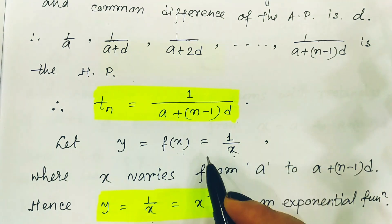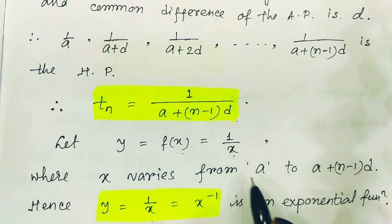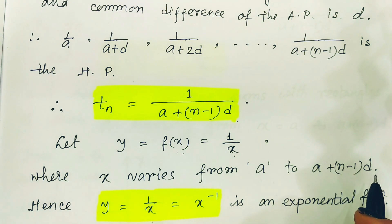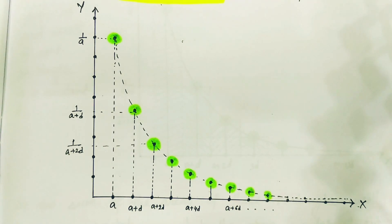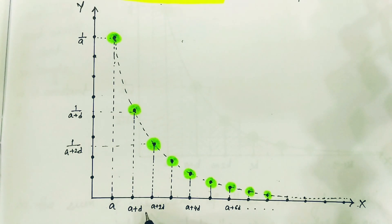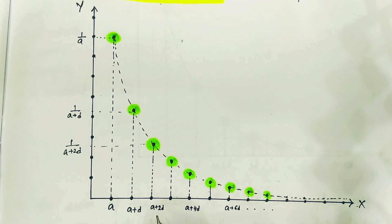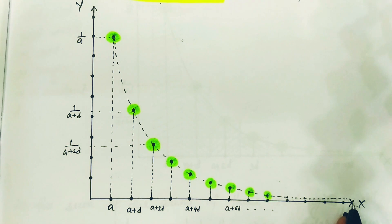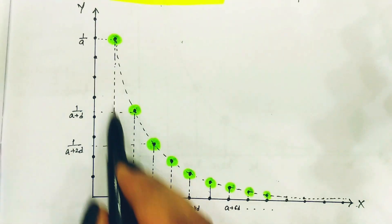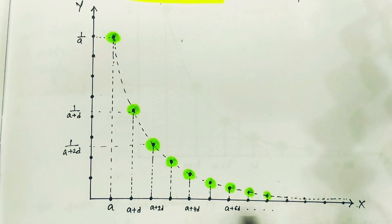Corresponding to that, if we substitute x where x varies from a to a+(n-1)d, then we can write this expression. If we plot this on graph paper, we find that corresponding to a, the value is 1/a; corresponding to a+d, the value is 1/(a+d); corresponding to a+2d, the value is 1/(a+2d). In this way, if we plot the entire graph, our target is to find the summation — meaning the entire area below this curve represents the entire summation of the series.